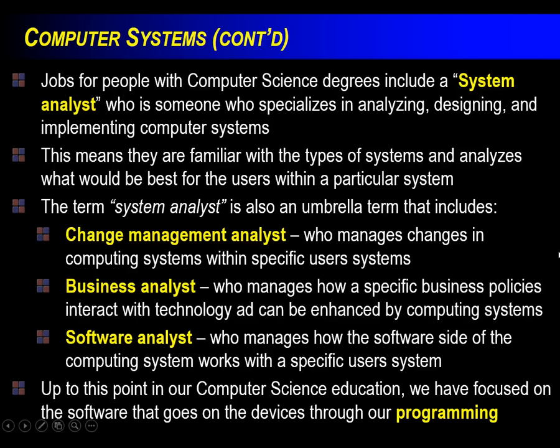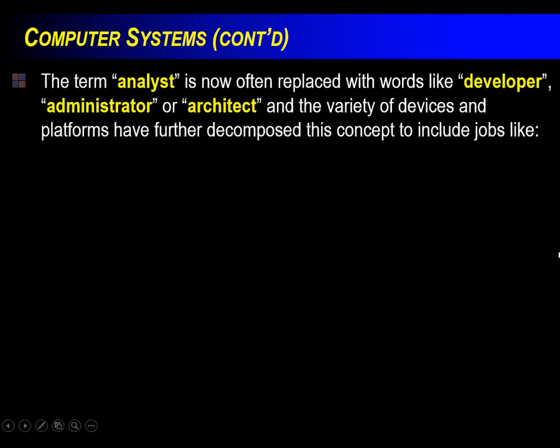Up to this point in computer science we've focused on programming, and that's a good thing because programming is the main tool of the computer scientist. But it is a much broader term than that, and that's why I want to start the grade 12 computer science course by looking at that. Even the word 'analyst' can be replaced by other words like 'developer,' 'administrator,' 'architect,' or 'engineer' — these words are now starting to become interchangeable for the job that these people undertake.